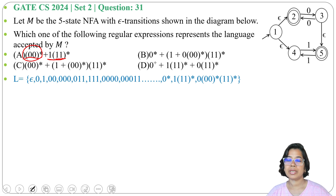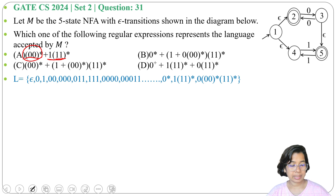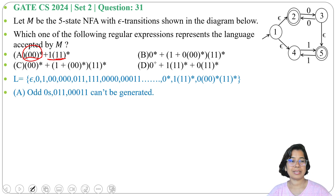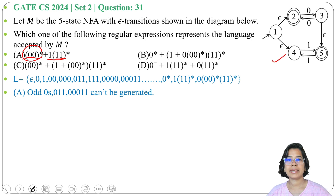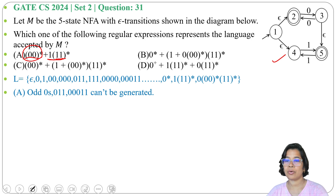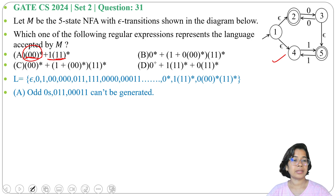So this epsilon NFA accepts even number of 0s and odd number of 1s, but here it also accepts odd number of 0s. Option A is not the regular expression for this epsilon NFA, as it is not generating odd number of 0s — it can only generate even number of 0s, but here it can also accept odd number of 0s via final state 5.